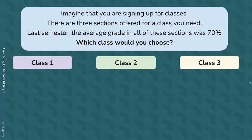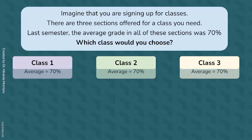Imagine that you're signing up for classes, and there are three sections offered for a class you need. Last semester, the average grade in all of these sections was 70%. Which one would you choose?